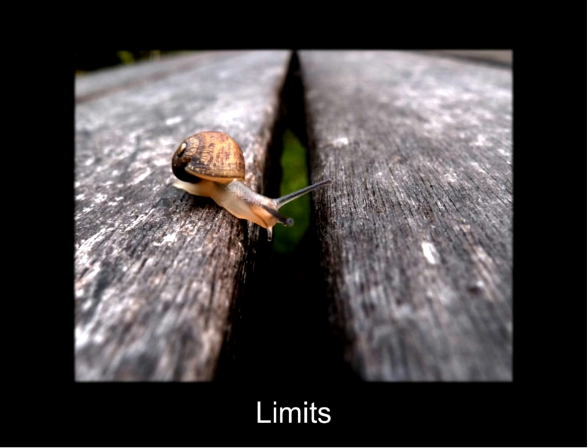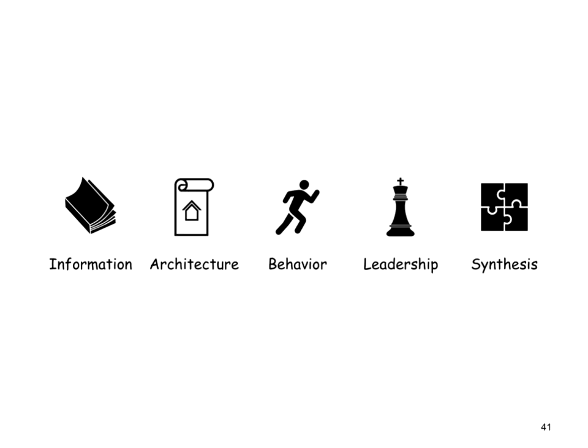Sometimes the only way to know our limits is to go beyond them. Now, when we're trying to change an organization, there's no one right way to do things. I think it's actually best to approach change with multiple methods, to think about how can we bring all the tools at our disposal to help effect change. So I'm going to talk a little bit about using information, using architecture, using behavior, and then leadership.